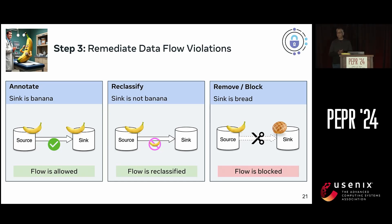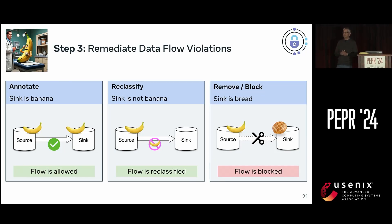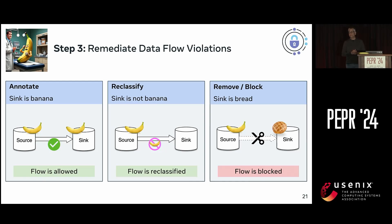There are a few cases that might be happening when a banana source flows to an unlabeled sink. The sink may simply be banana but not yet labeled, so you fix it by applying the banana label. Sometimes the data flow is a false positive. Or the banana may be transformed in a way that makes it safe — maybe it's being blended into a smoothie and is properly anonymized, no longer identifiable as an individual banana. In that case, we apply a label to the flow indicating we're dropping the banana label, a process we call reclassification. Finally, you might find flows going into the bread-making apparatus — in that case, you either refactor the code to remove the data flow, or enable enforcement so those flows are blocked at runtime.